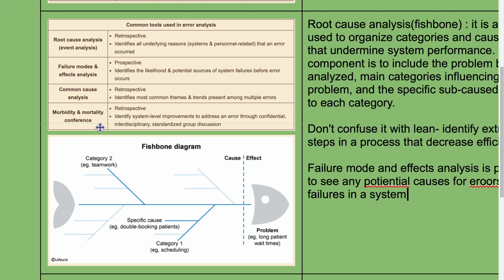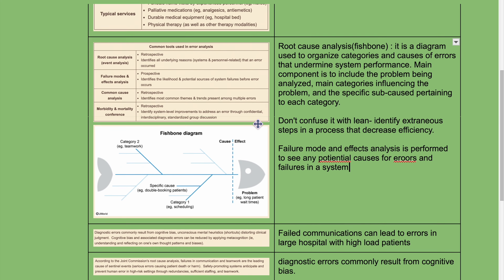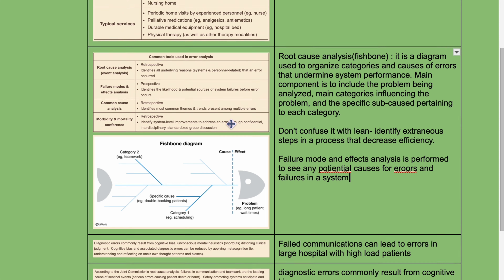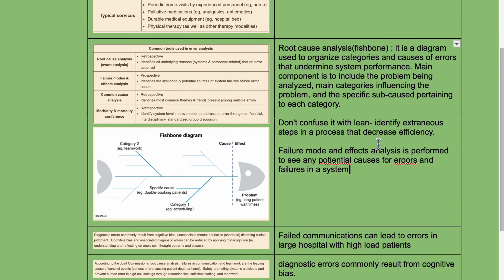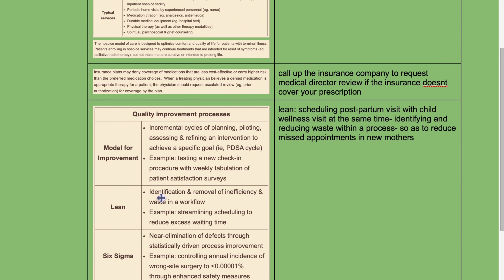Morbidity and mortality conference is retrospective and identifies system-level improvements to address errors through confidential, interdisciplinary, standardized group decisions. Failure mode and effect analysis identifies potential causes of errors and failures in a system. Don't confuse it with lean. Lean identifies and removes inefficiency and waste in a workflow — it is about improving the process, not error analysis.